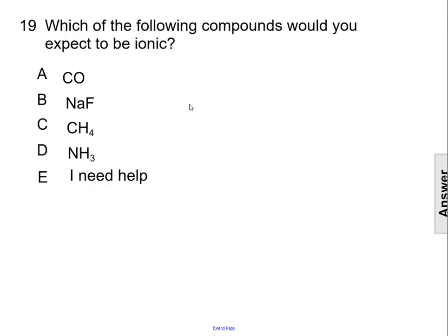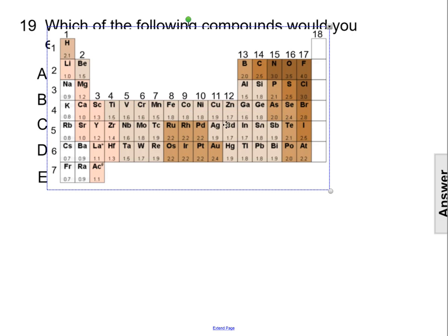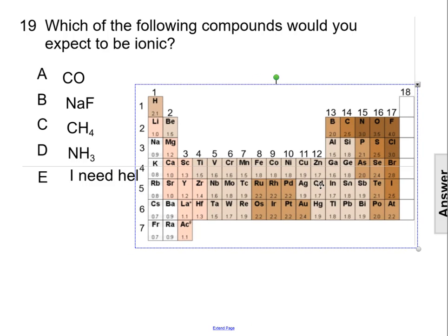We can determine this by referring to the electronegativity chart. In this chart, we're looking for differences of 1.7 or greater, which is the requirement to form an ionic compound.